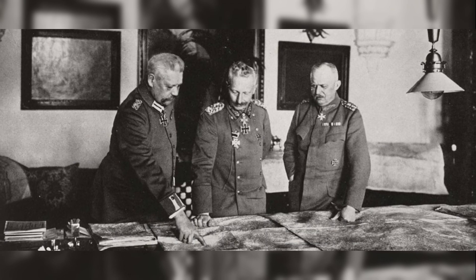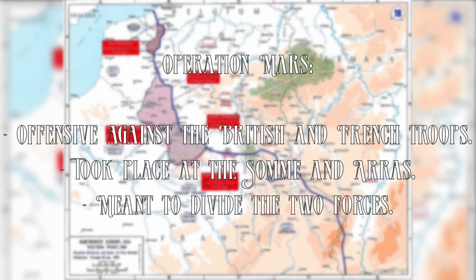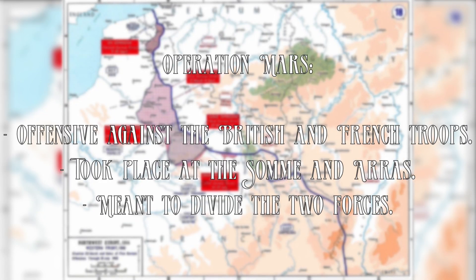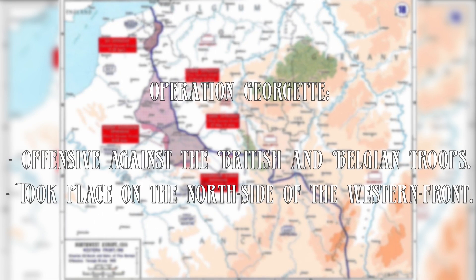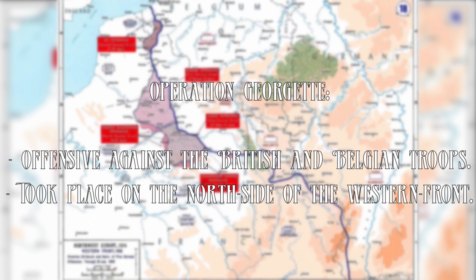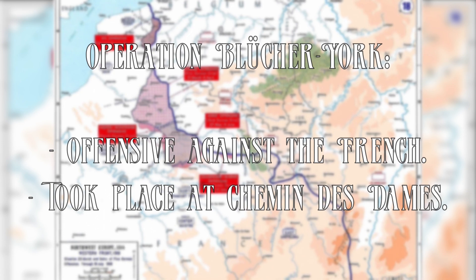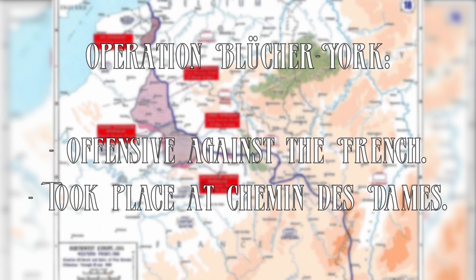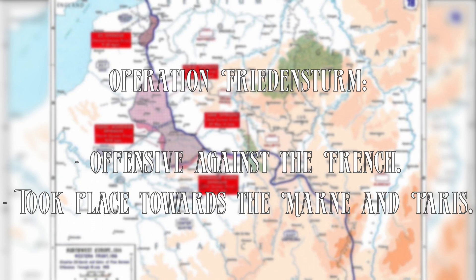Ludendorff planned a couple of offensives which would make part of Operation Michael, the military name for the Spring Offensive. They were as follows: Mars, an offensive against the British and French troops at the Somme and Arras, meant to divide the two forces. Georgette, an offensive in the north against the British and Belgian troops. Blücher-York, an offensive against the French at Chemin des Dames. And lastly, Friedensturm, an offensive against the French towards the Marne and Paris.